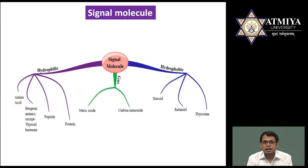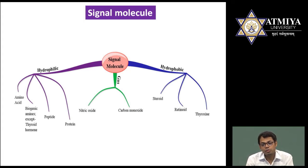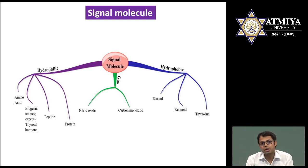Accordingly, signal transduction occurs and different biological responses follow. The next type is gaseous molecules — gases are able to diffuse, so their receptors are present inside the cell. Similarly, hydrophobic molecules are non-polar and able to diffuse through the lipid layer, directly entering the cell and crossing the plasma membrane. Their receptors may be present in the cytoplasm, on the nuclear membrane, or inside the nucleus — so their receptors are always intracellular.